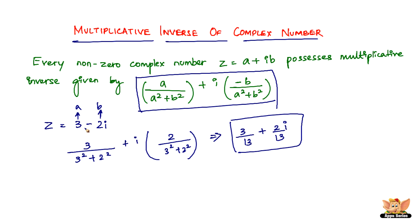So, the Multiplicative Inverse of 3 minus 2i is 3/13 plus 2i/13. All you have to do to find the Multiplicative Inverse is know this formula and substitute the values of a and b. It's a very simple concept — just remember the formula and substitute. That ends this video; I'll see you in the next videos with more concepts based on complex numbers.